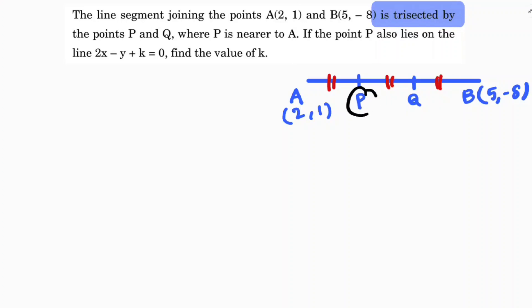I need to find P, and P lies on the line 2x - y + k = 0, then find k. Clearly, P divides AB in the ratio 1:2.